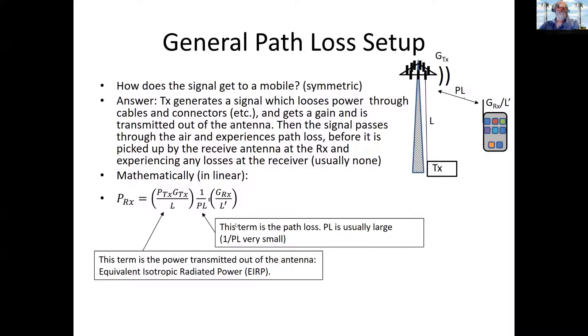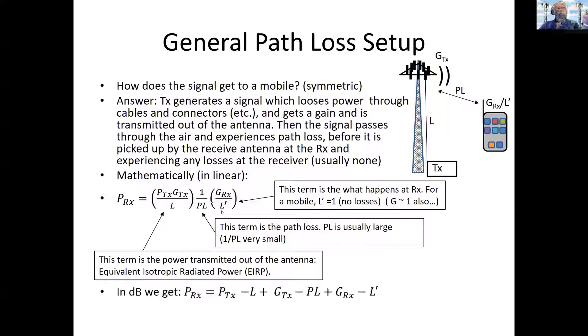And then it goes out into the cold, cruel world. It gets propagated out of the antenna and experiences path loss. In general, PL is going to be a very big number. One over PL is going to be very small because, let's face it, air is a wonderful insulator. Vacuum is a wonderful insulator, too. Going out from the antenna, you're going to lose a lot of power. And then, finally, you arrive at the receiver here. And if you're thinking about going toward the mobile phone, the losses are going to be negligible. L prime might as well be one. GRX might as well be one also. This term doesn't count for much in the mobile phone.